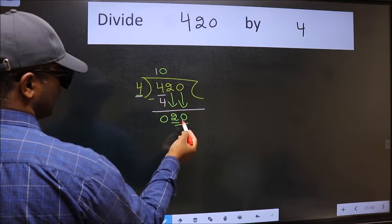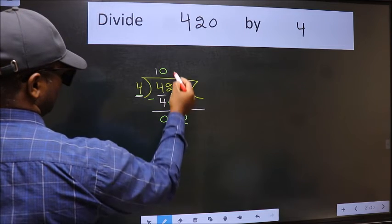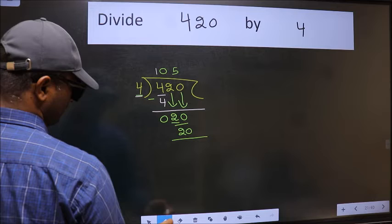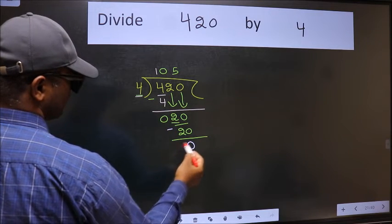Now 20. When do we get 20 in 4 table? 4, 5 is 20. Now we should subtract. We get 0.